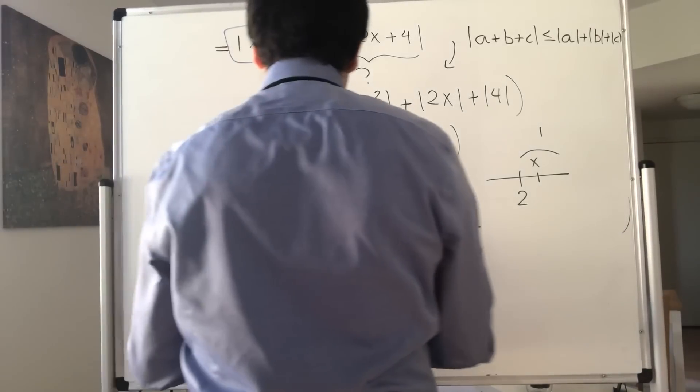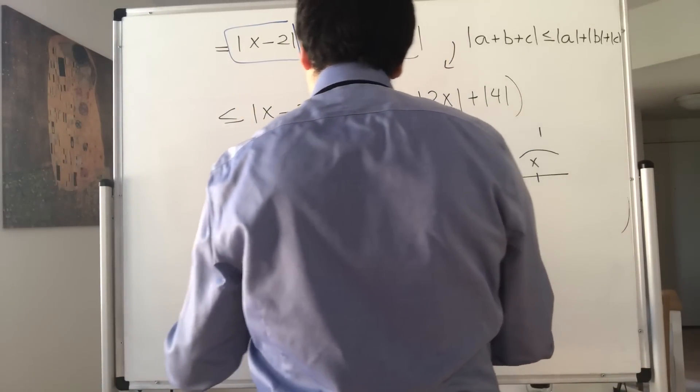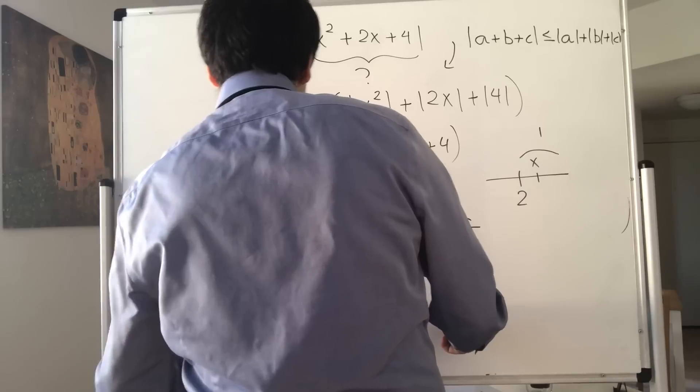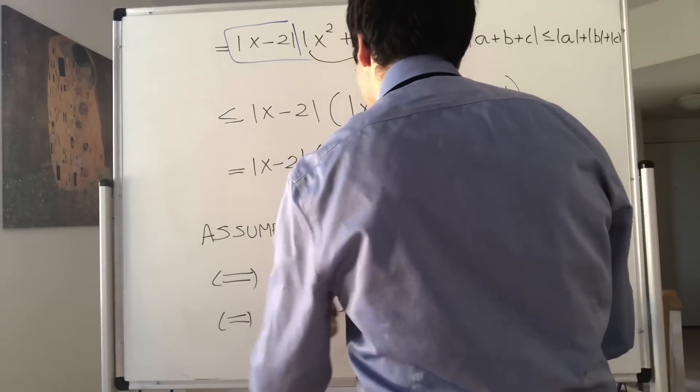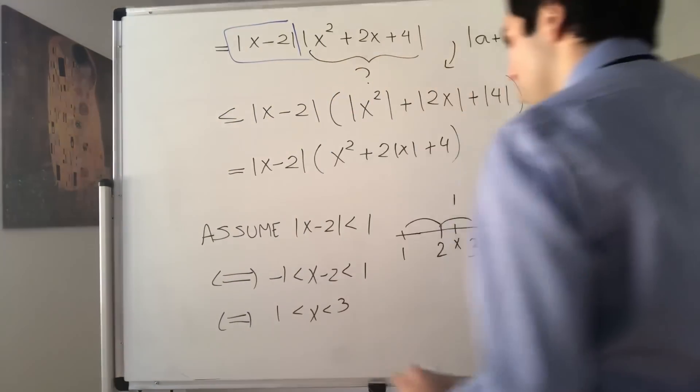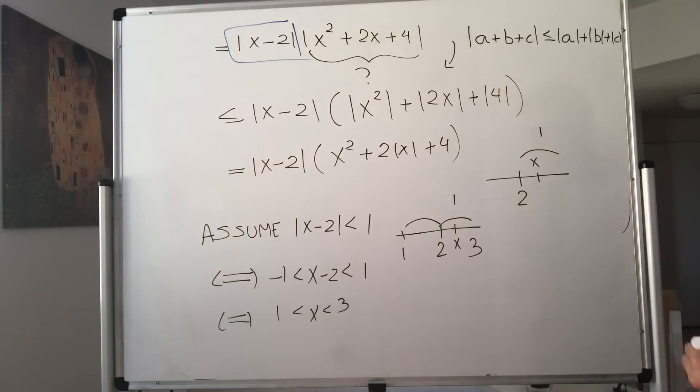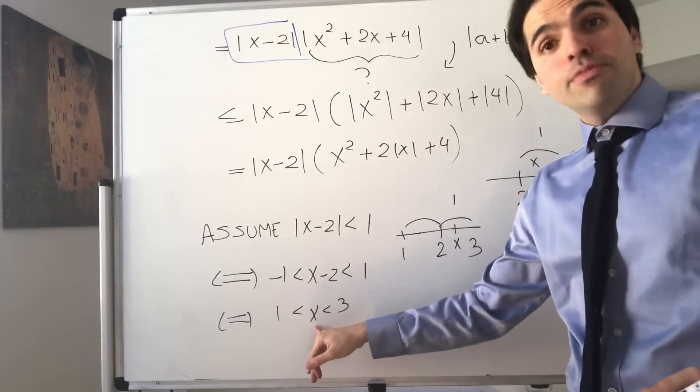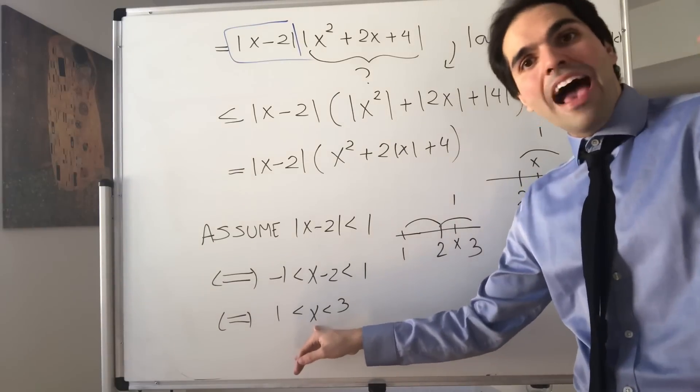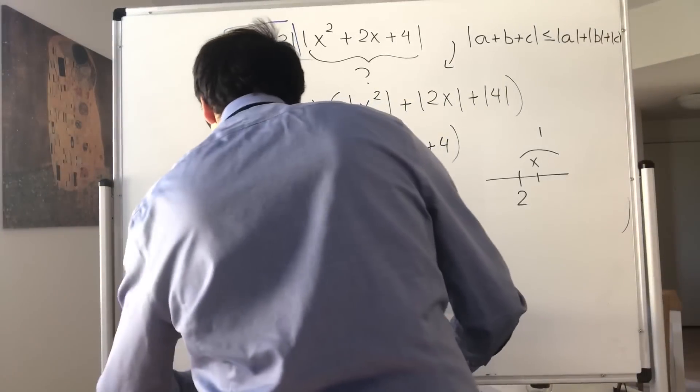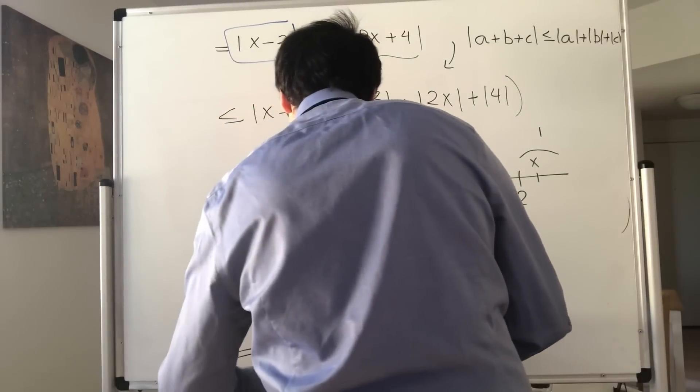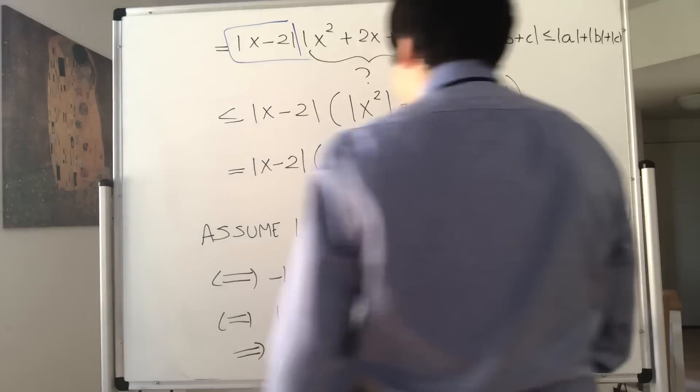If you want, you can write this as x minus 2 is between 1 and minus 1. So x is between 2 plus 1 which is 3 and 2 minus 1 which is 1. In particular, the absolute value of x, the magnitude of x, is at most 3.